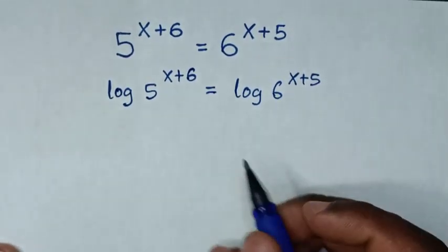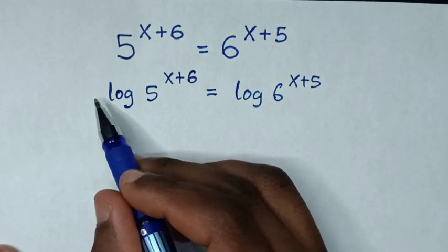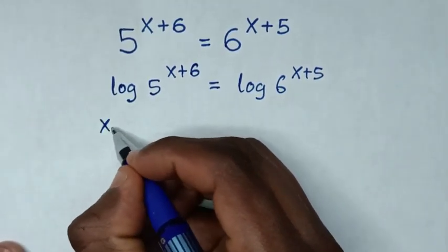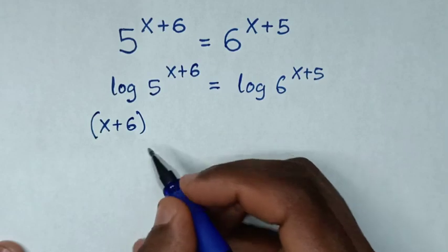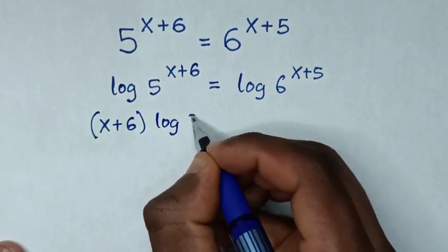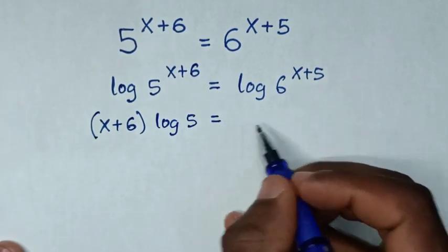Then in the next step, this power will move to the base, so it will be x plus 6 bracket log of 5, then is equal to...